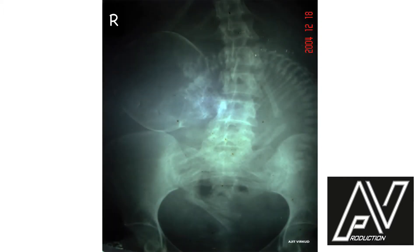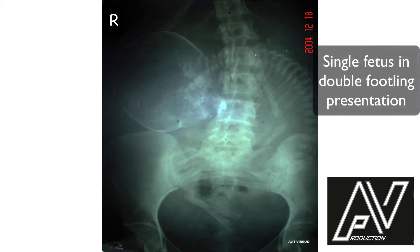This is a plain x-ray of the abdomen and pelvis, AP view, well centralized, well exposed, showing a single fetus in longitudinal lie, flexed attitude. The presentation is breech and the presenting part is double footling. The head is well flexed and there are no obvious fetal skeletal abnormalities. Therefore, my diagnosis is single fetus in double footling breech malpresentation.